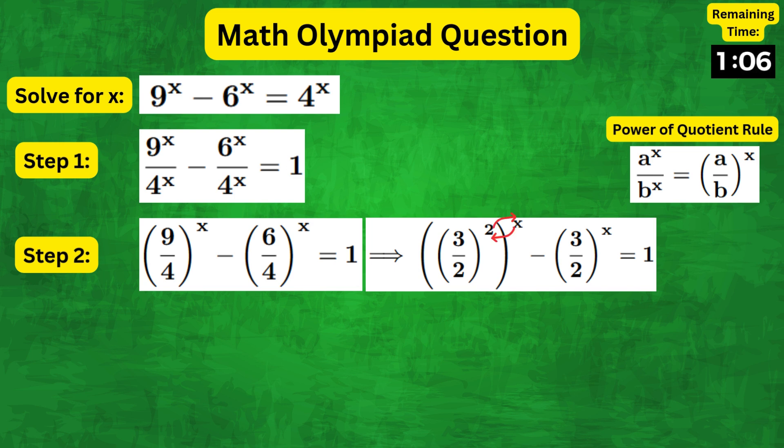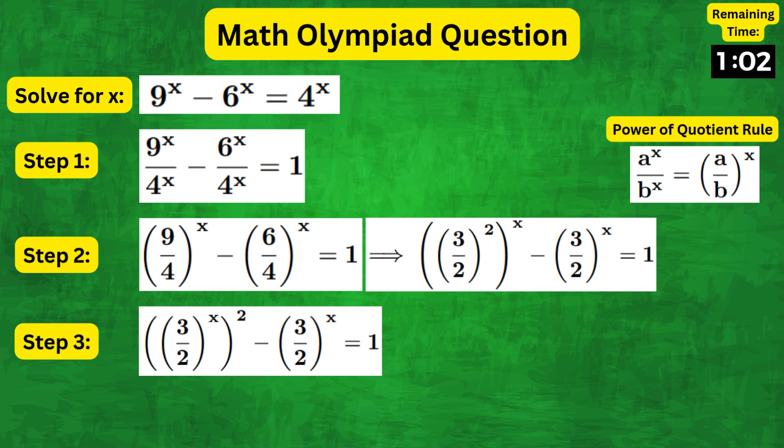And then for the first term, we can simply swap the powers to get 3 over 2 to the x whole squared minus 3 over 2 to the x equals 1.